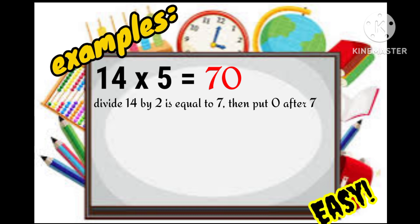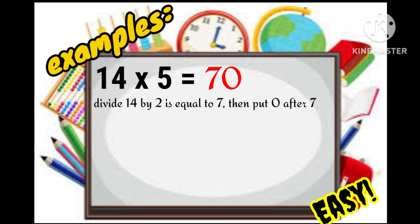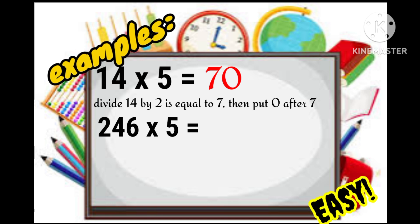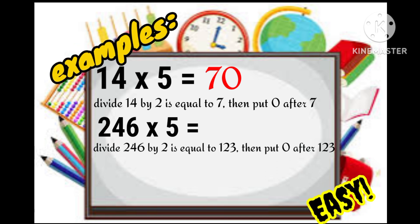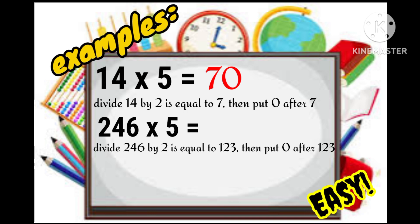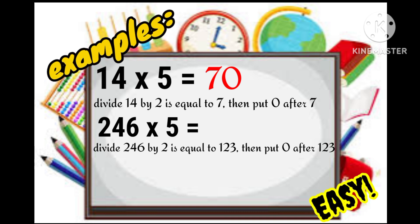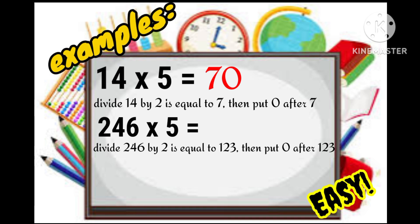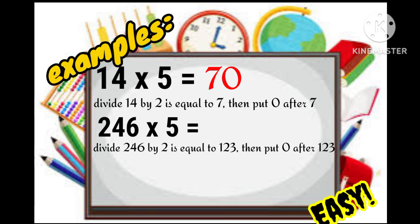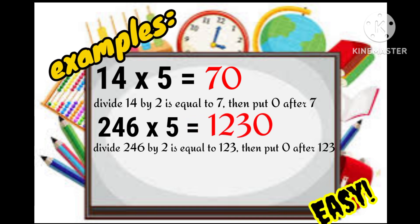Let's try another example. If we have 246 times 5, we divide the number 246 by 2 which is equal to 123. And then we put 0 after the number 123. So that means 246 times 5 is equal to 1230.